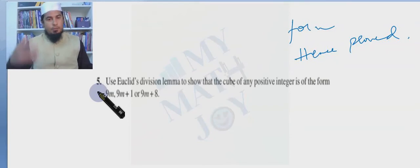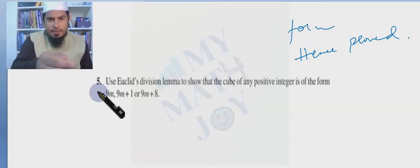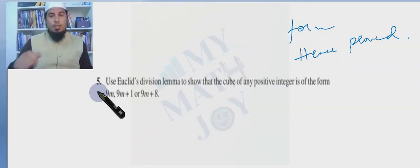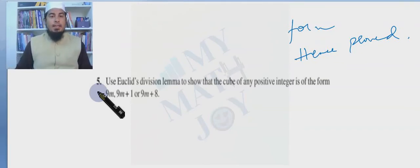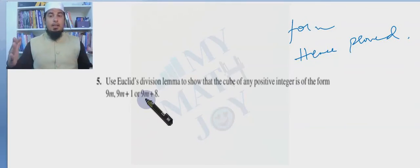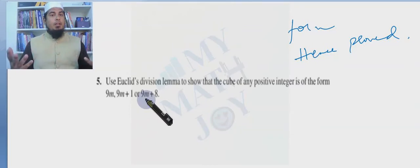Problem five asks us to prove a mathematical statement: use Euclid's division lemma to show that the cube of any positive integer is of the form 9m, or 9m+1, or 9m+8.